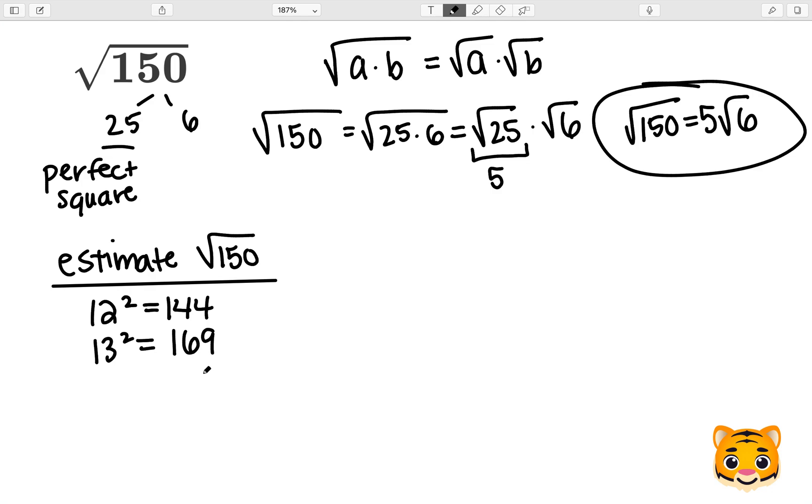Because 150 is between 144 and 169, we can write the following inequality. The square root of 144 is less than the square root of 150, which is less than the square root of 169.